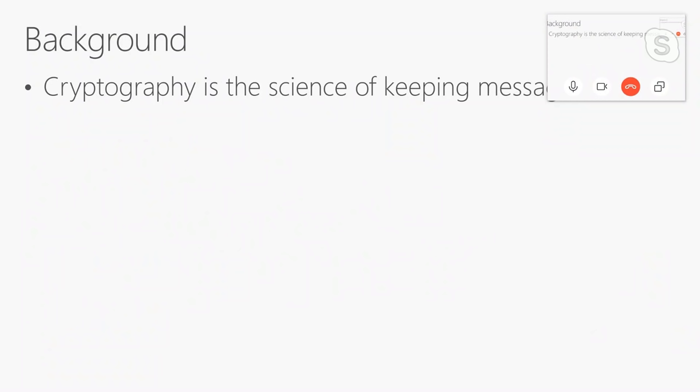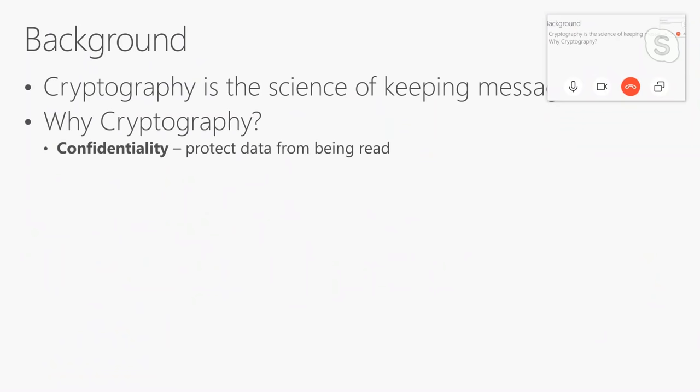Some background: cryptography is the science of keeping messages secure. Why do you want cryptography? There are really four different things. Most people think about it for confidentiality — you're trying to protect data from being read, something you don't want people to see. There's also integrity, where I want to verify that data has not been modified. A lot of times on download sites, you'll see a hash to show you that the data has not been tampered with.